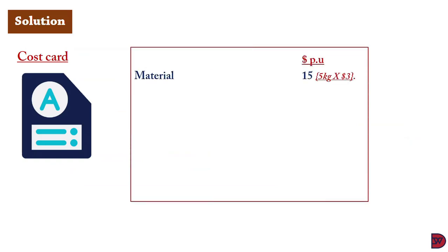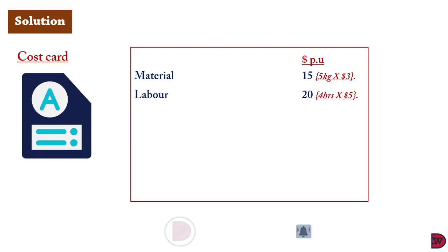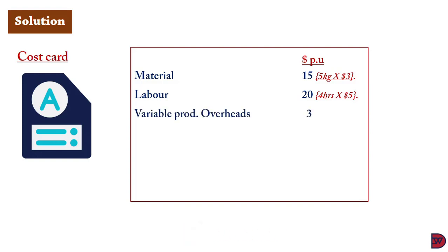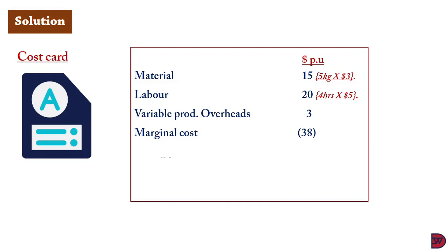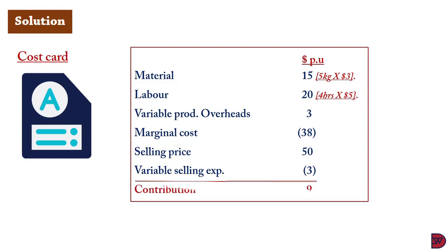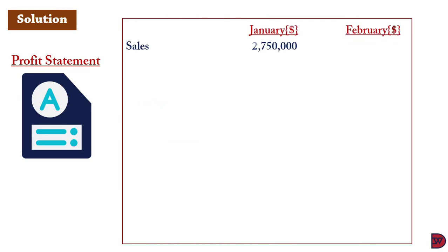Moving into the solution, we start with the cost card. Material: $15 — 5 kg required at $3 per kg. Labor: $20 — 4 hours at $5 per hour. Variable production overhead: $3 as stated. The marginal cost is therefore $38. The selling price is $50; less variable selling expenses of $3 (the non-production variable cost), this leads to a contribution of $9 per unit.